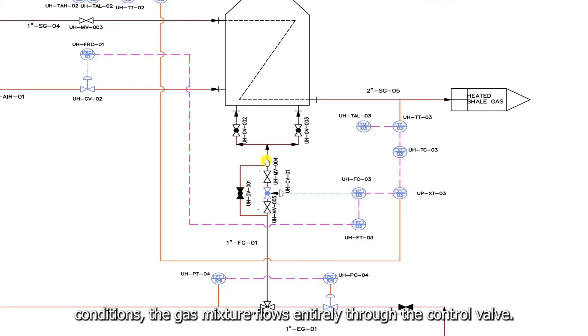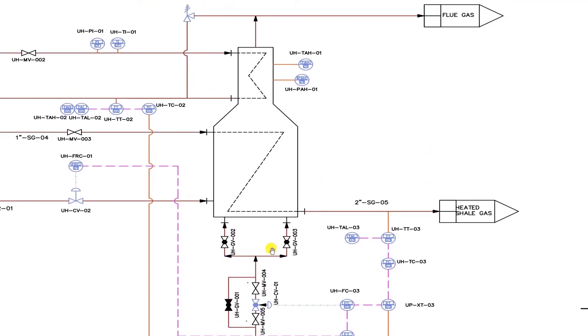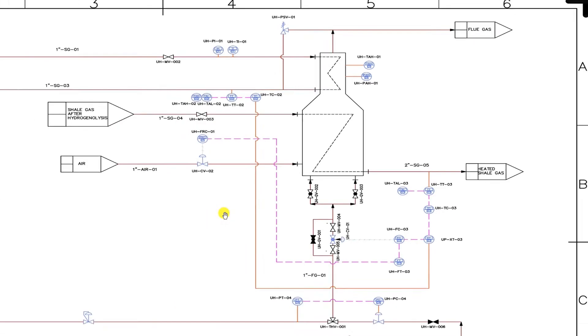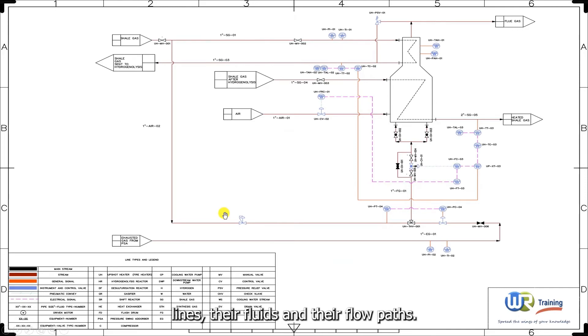Now, under normal operating conditions, the gas mixture flows entirely through the control valve. The flow of gas is then split to feed the burners of the fired heater. So, these are the main process lines, their fluids, and their flow paths.